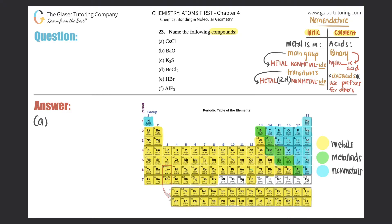For part a, we need to name CsCl. The first thing you're always going to do is find out whether a compound is ionic or covalent — that's always the first step. Is CsCl ionic or covalent? Cs is a metal and chlorine, Cl, is a non-metal. That makes it ionic. Remember: ionic is always a metal with a non-metal.